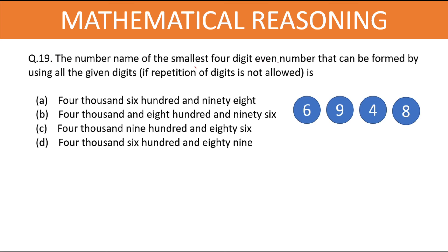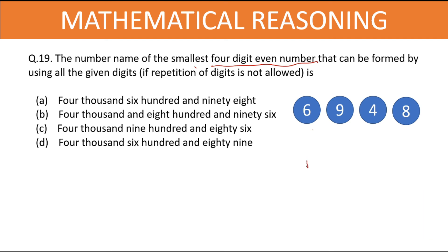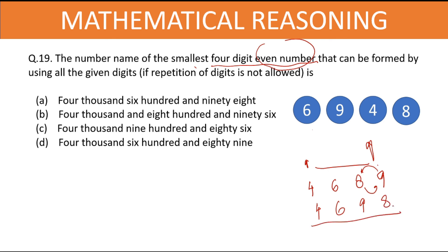Find the number name of the smallest four-digit even number that can be formed using all the given digits — 6, 9, 4, 8 — without repetition. To create the smallest number, start from the smallest digit in thousands place. Arranged: 4, 6, 8, 9. But we need an even number, so the ones digit must be even. Rearranging gives us 4698, which is the smallest four-digit even number. That is option A.